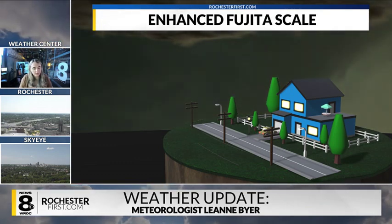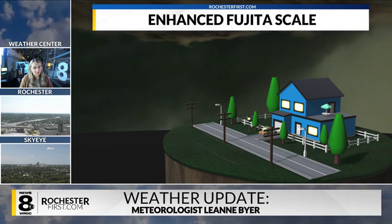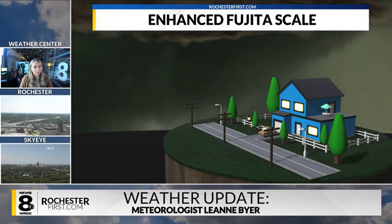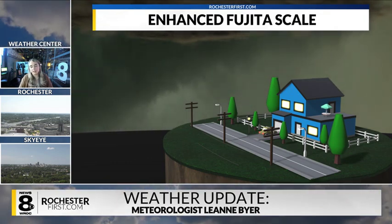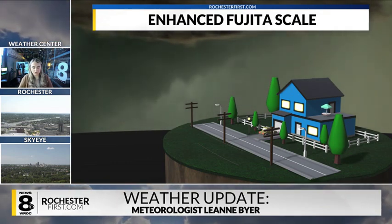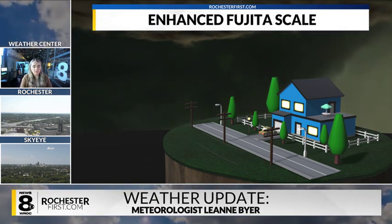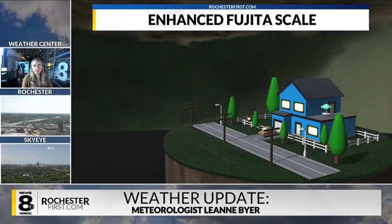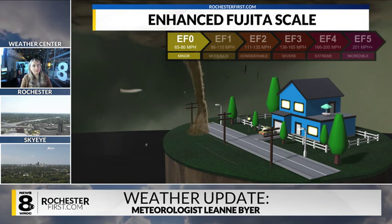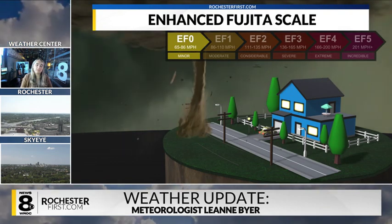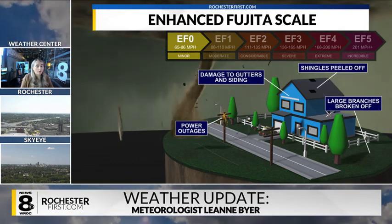There are six different levels of the scale, with EF0 being the weakest and EF5 being the most catastrophic. Let's talk about some of the damages that can be associated with each different level on the scale.